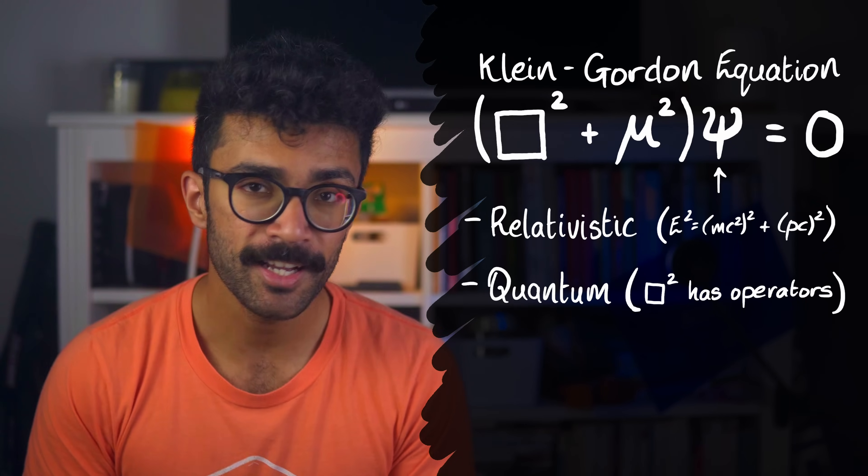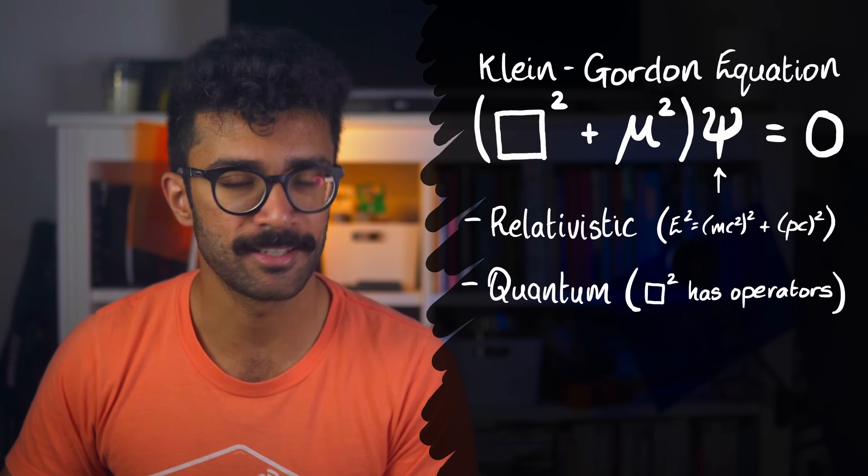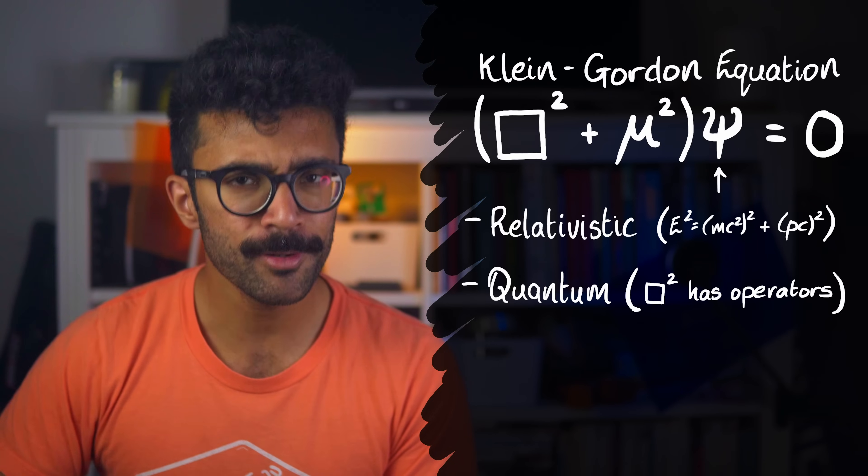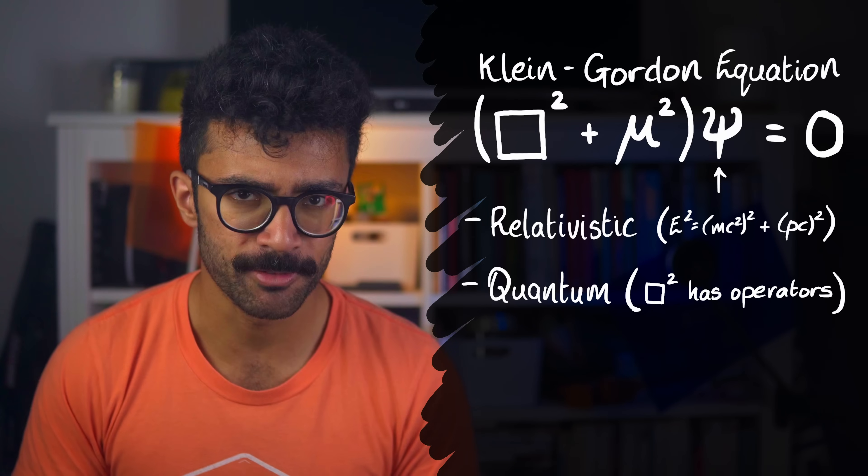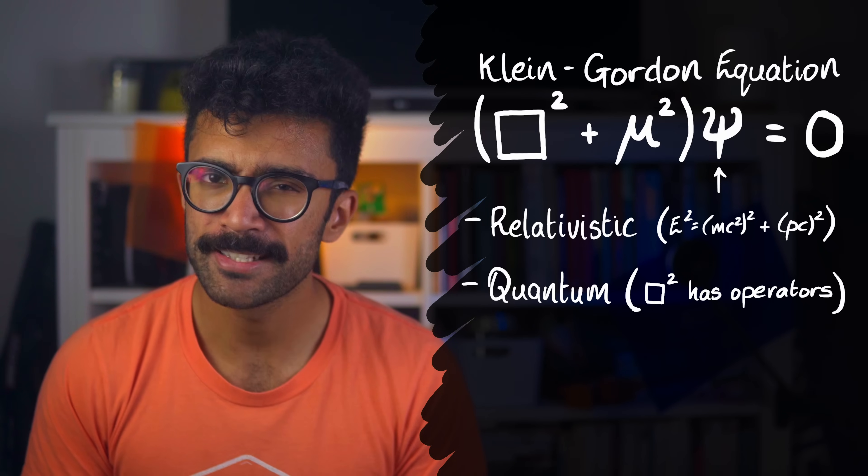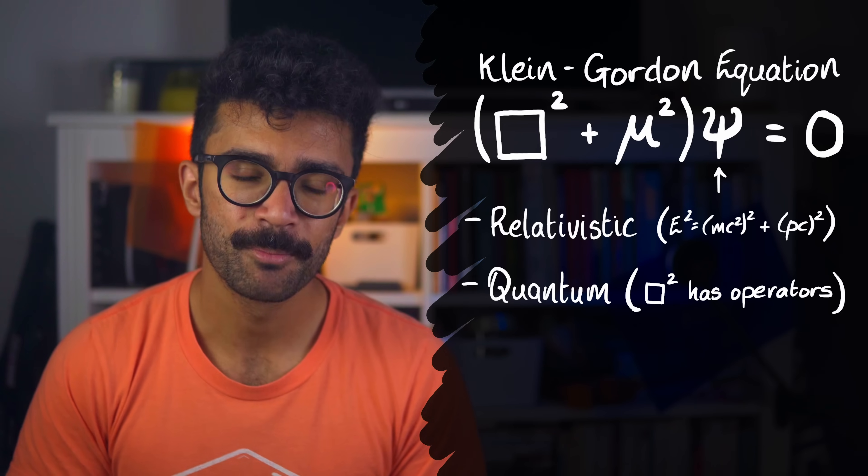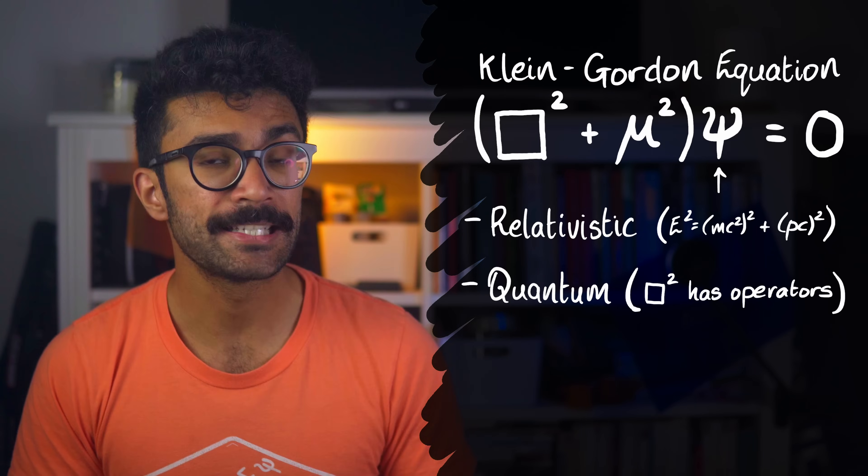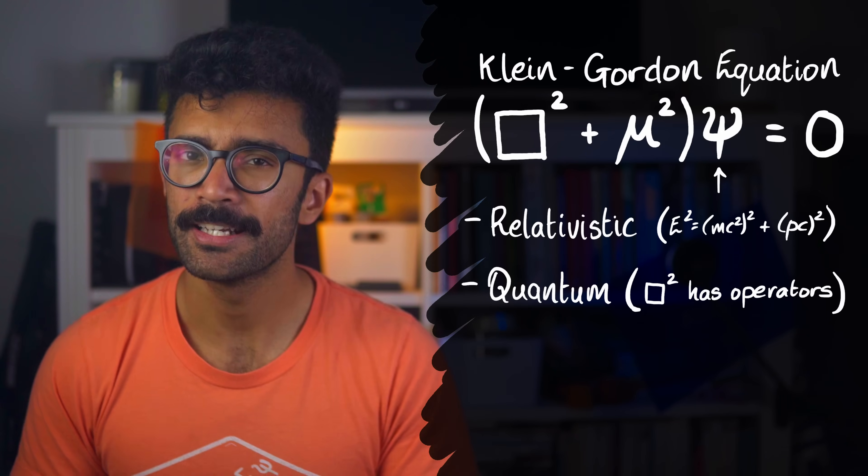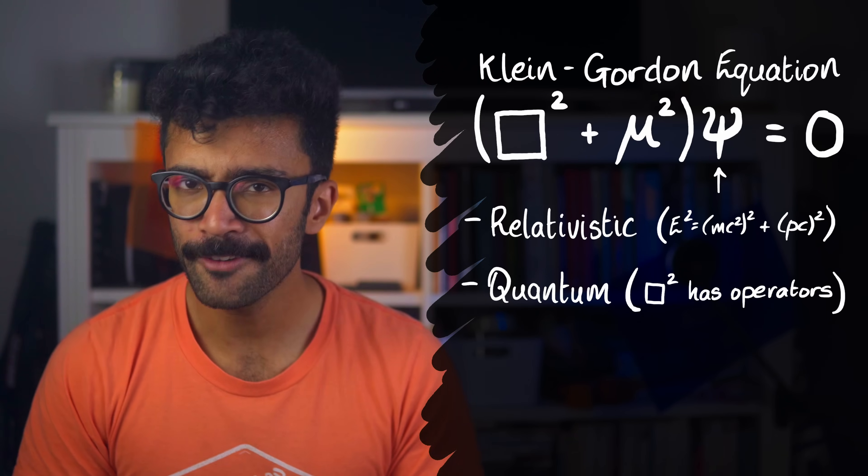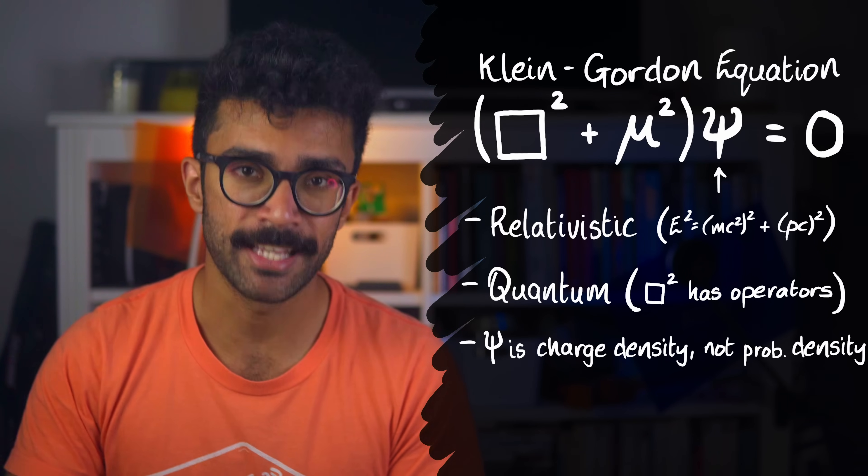Next, this psi here doesn't quite mean the same thing in the Klein-Gordon equation as it does in the Schrodinger equation. In the Schrodinger equation, we interpreted psi as being related to probabilities of measurement results. Specifically, if we want to get technical, the modulus of psi squared gave us probabilities. But in the Klein-Gordon equation, this quantity doesn't always have to be positive. And it doesn't make sense to have negative probabilities. Therefore, this quantity is actually interpreted as representing charge density.